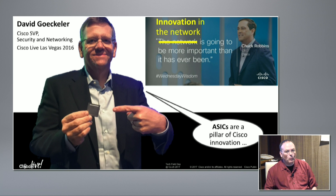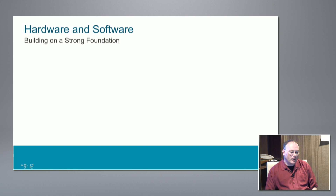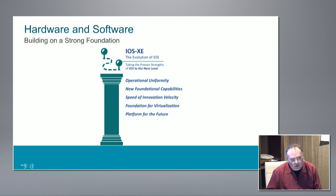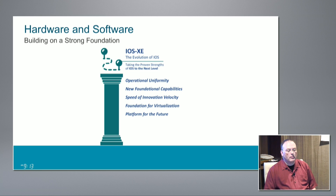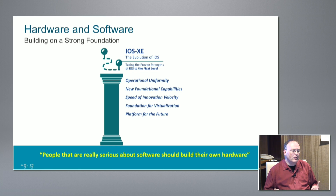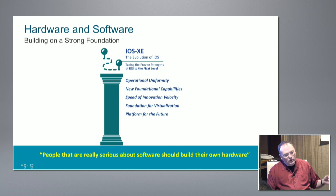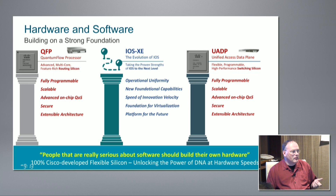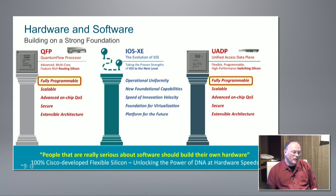At the end of the day, it's about a fusion of hardware and software. We've been evolving our software, evolving IOS. But it's really about that fusion of hardware and software. People that are really serious about software should build their own hardware — said by Steve Jobs when he introduced the iPhone 10 years ago, and originally attributed to computer pioneer Alan Kay. When we think about the hardware we make in enterprise networks — Quantum Flow Processor and Unified Access Data Plane — our primary routing and switching silicon — both of these chips have the attribute of being fully programmable.